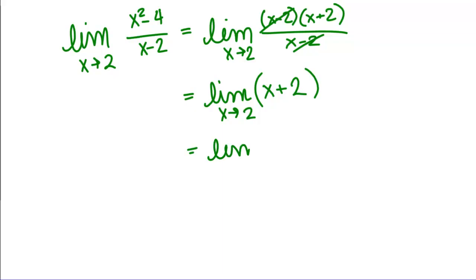But that's a function we can use the limit laws on. So limit as x goes to 2 of x, plus limit as x goes to 2 of 2, gives me 2 plus 2, which is 4.